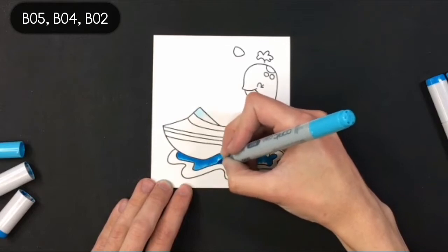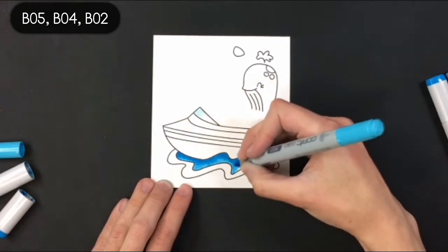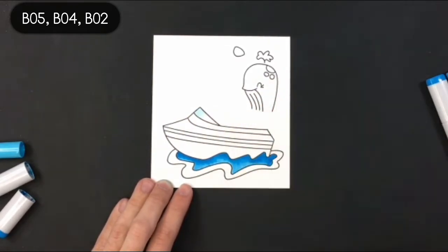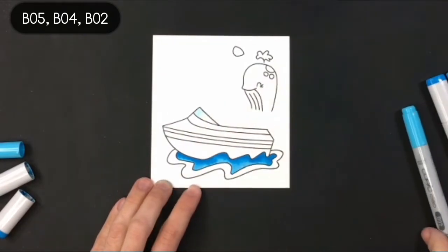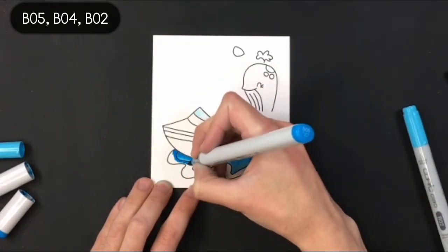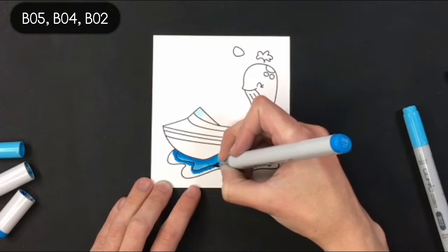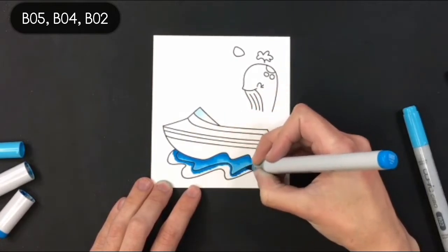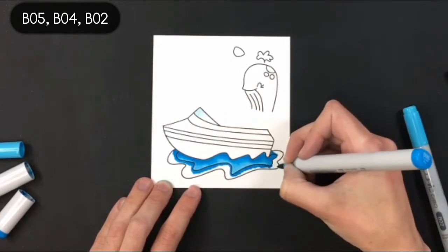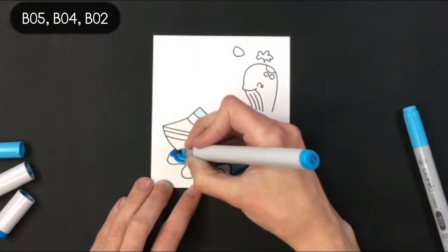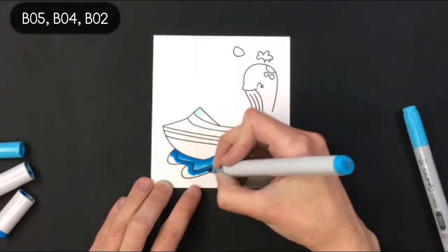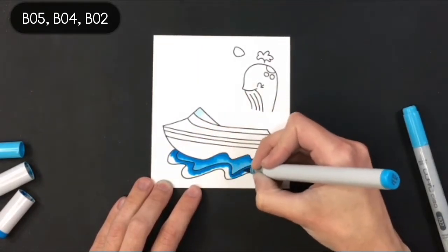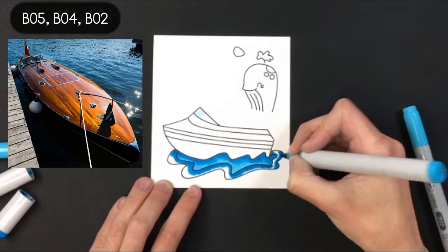So I'm from Canada and I grew up going to a cottage in Muskoka which is the epitome of beautiful Canadian cottage country. Every time we went to the marina there would always be these really really fancy boats that I'm sure cost a ton of money and they were wood grain and I'd always thought that they were so fascinating and so pretty so I wanted this boat to look like that.